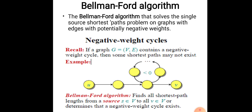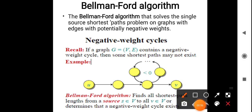So what is the Bellman-Ford algorithm? It solves the single source shortest path problem on a graph with edges that potentially have negative weights. For example, if an edge UV has a weight of minus 3, we can still find the shortest path from a source to vertex V using Bellman-Ford.